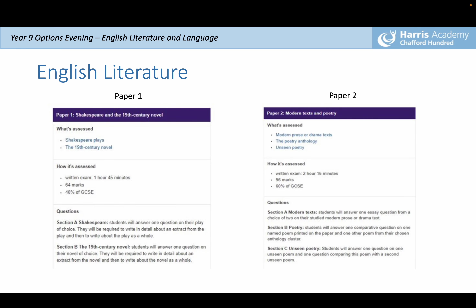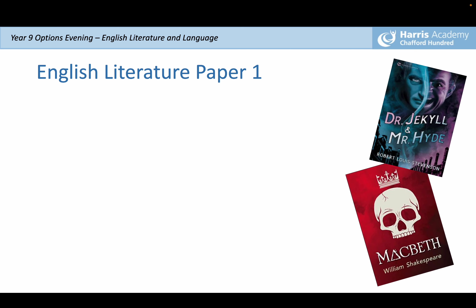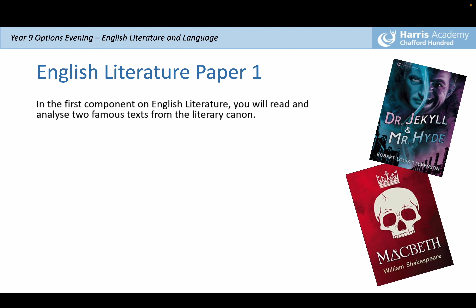The next thing we're going to look at is English Literature. Just like Language, there are two papers: Paper 1 is 1 hour 45 minutes and worth 40% of the overall GCSE, and Paper 2 is slightly longer at 2 hours 15 minutes and worth 60%. In English Literature Paper 1, you will read and analyse two famous texts from the literary canon — you may have heard of these already.